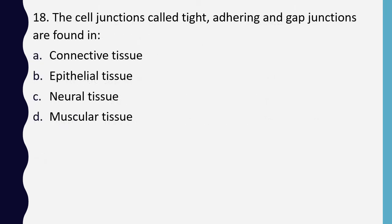Question 18. Cell junctions called tight, adhering and gap junctions are found in: connective tissue, epithelial tissue, neural tissue, or muscular tissue. Correct answer is option B: epithelial tissue.